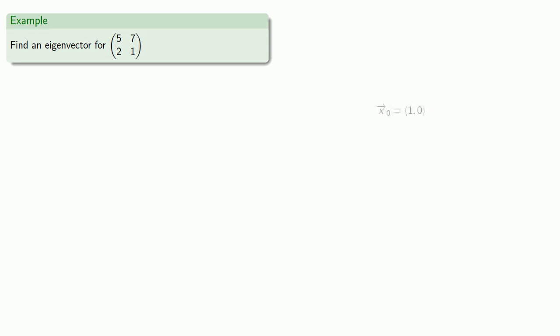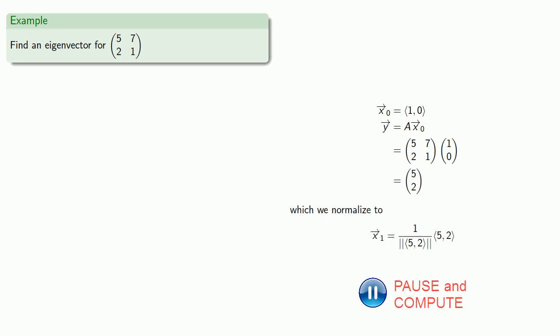So again, we'll use our traditional starting vector (1, 0). We'll first compute y, which is A applied to x_0. Which gives us the vector (5, 2). And then we normalize that. And we'll keep four decimal places of accuracy.